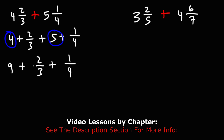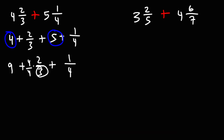I'm going to multiply the first fraction using the denominator of the second. So I'm going to multiply it by 4 over 4. And the second fraction, I'm going to use the denominator of the first to get common denominators. So I'm going to multiply it by 3 over 3.